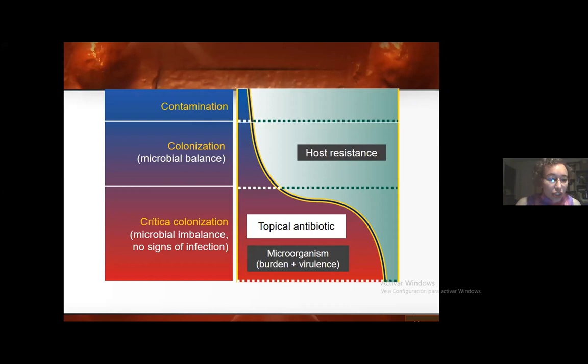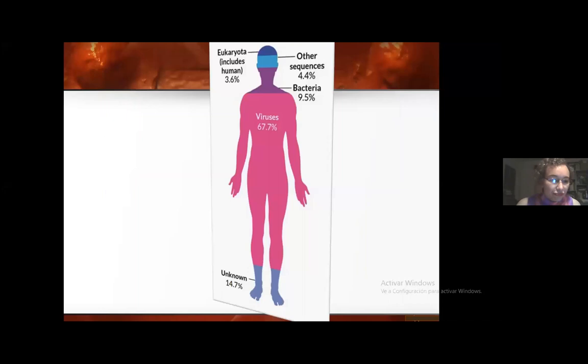At this point, topical antibiotics are a good option. But when the antibiotic selected is not appropriate, the infection becomes established and you might need systemic antibiotics. Systemic antibiotics are harmful because they don't have a GPS to detect the pathogen — they travel through the blood all over the body and wherever they find susceptible bacteria, they kill it, even good bacteria of the microbiota.